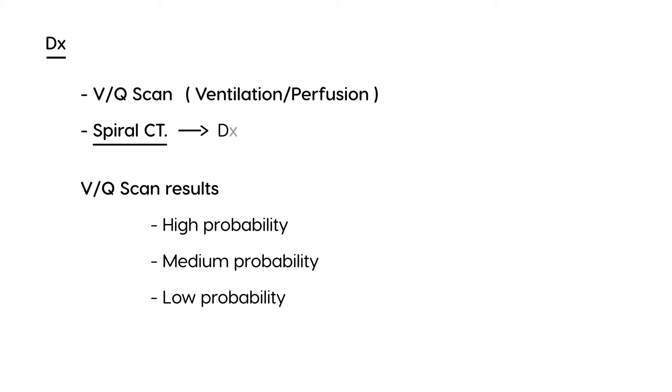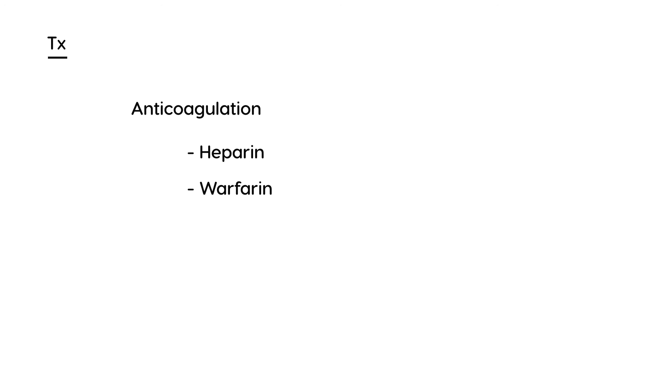For treatment, you're looking at two very common medications: heparin and warfarin. These are the mainstays of treatment for acute DVT and pulmonary embolism. Heparin is typically used in the acute setting, and warfarin is used for longer-term management.